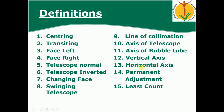An important aspect of theodolite is permanent adjustment. Permanent adjustment means fixing the desired relationship between the fundamental axes — the line of collimation, axis of telescope, bubble tube, vertical axis, and horizontal axis. That process is called permanent adjustment. Least count means the minimum reading we can measure using the theodolite — the minimum reading we can take on a vernier — that is called the least count of a theodolite.